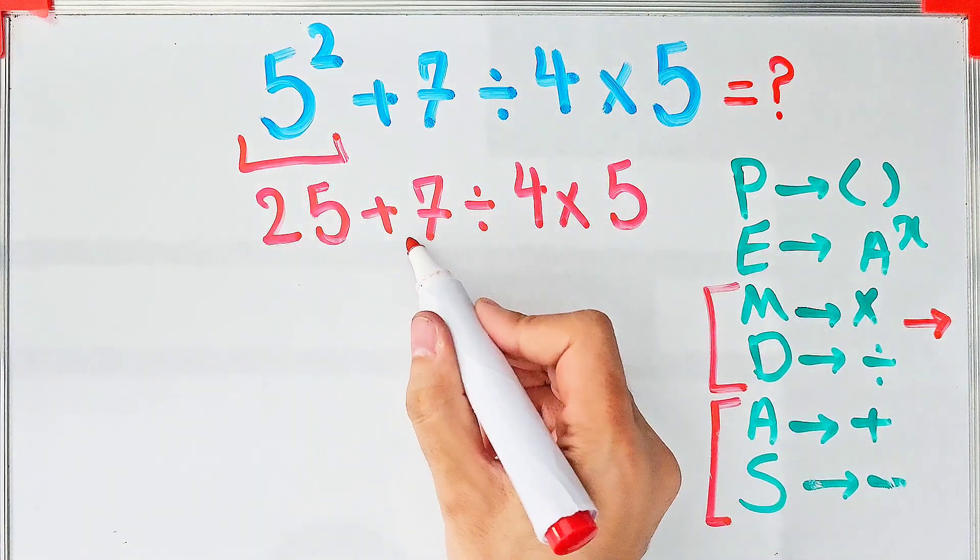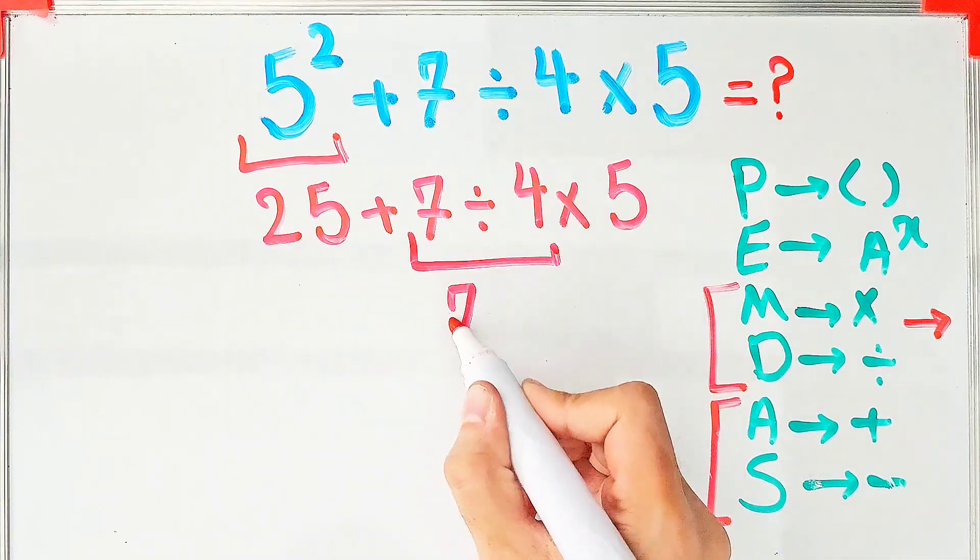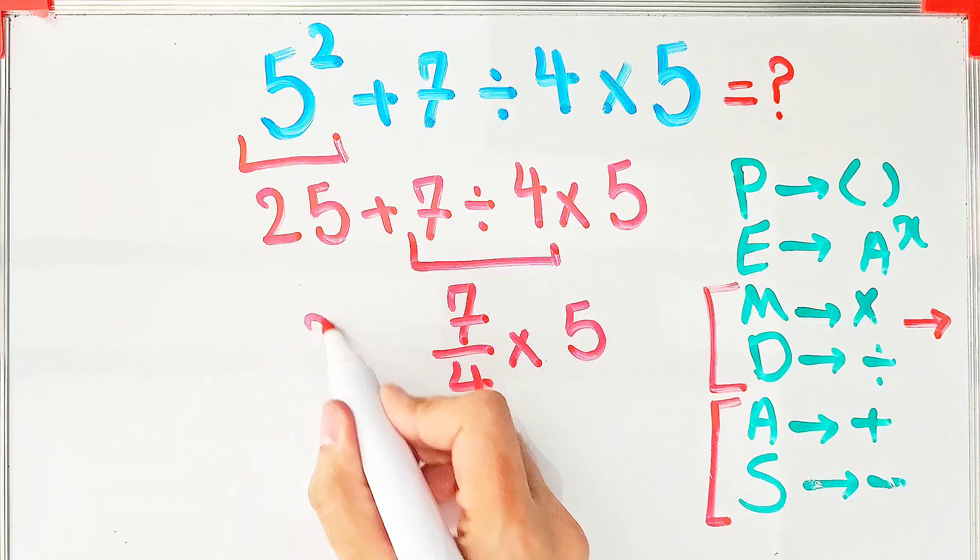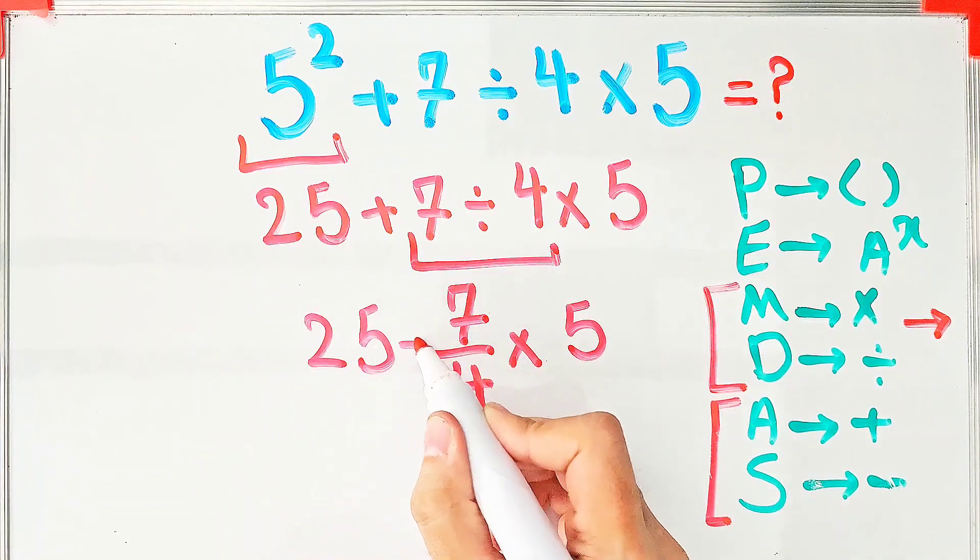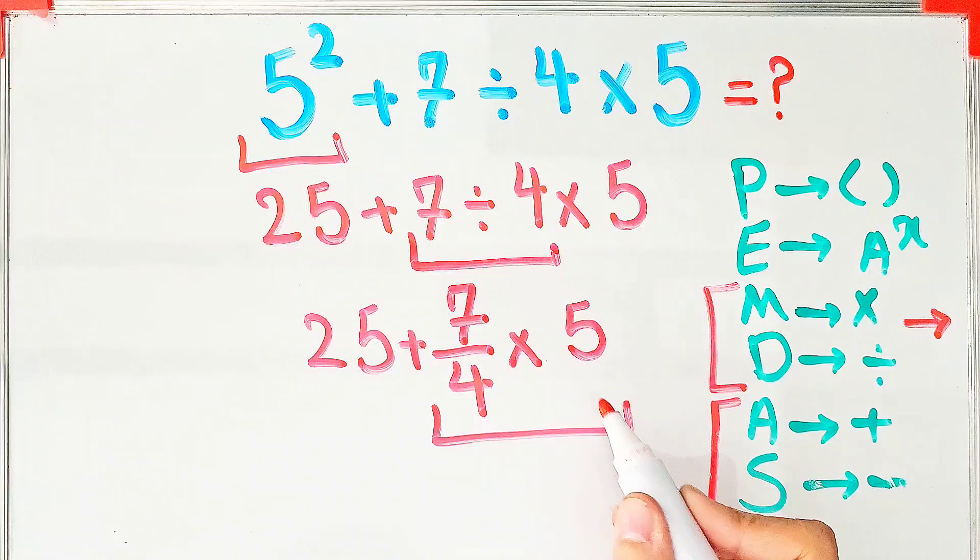In this step, because we have addition, division, and multiplication, we start from the left and do this division. We have 25 + 7/4 × 5. In this step we do the multiplication because multiplication has higher priority than addition. We have 35 divided by 4.